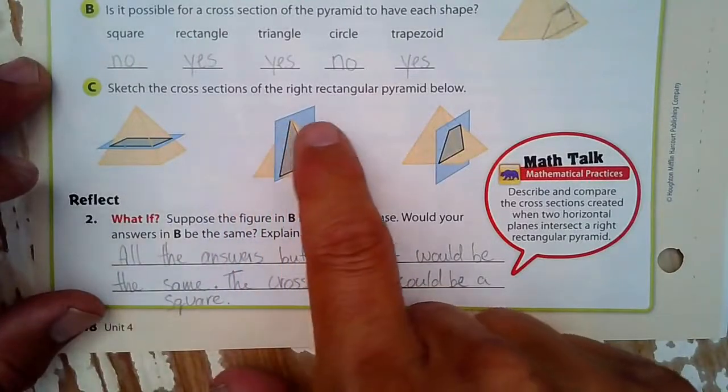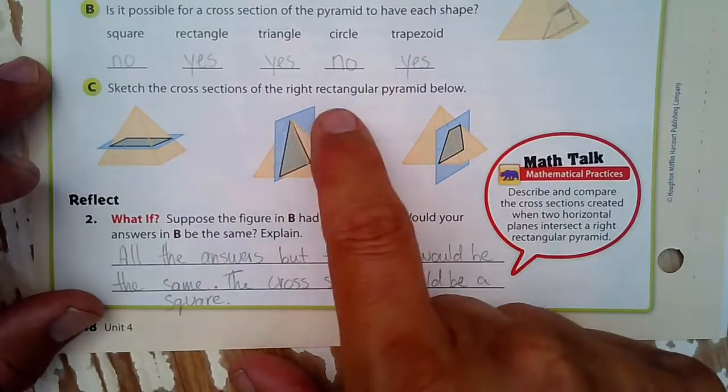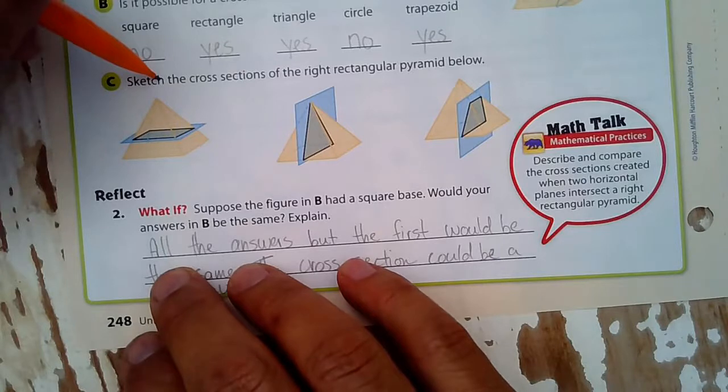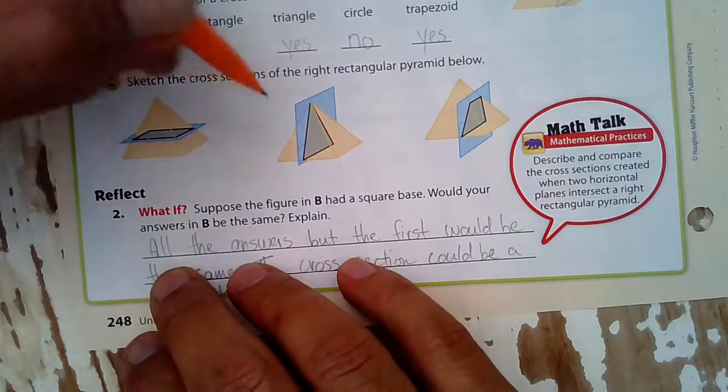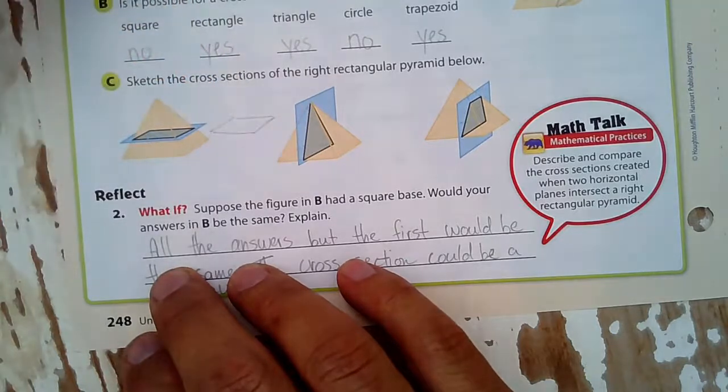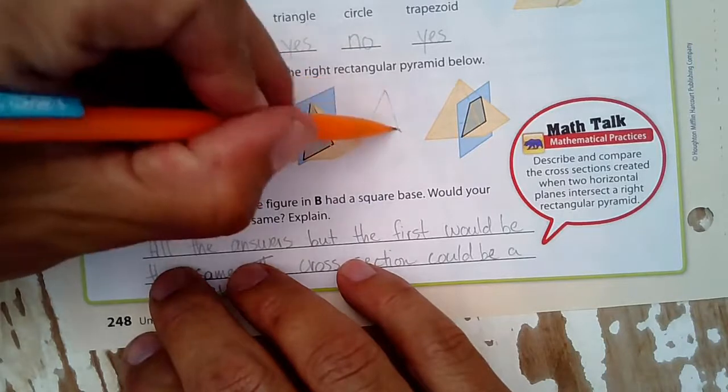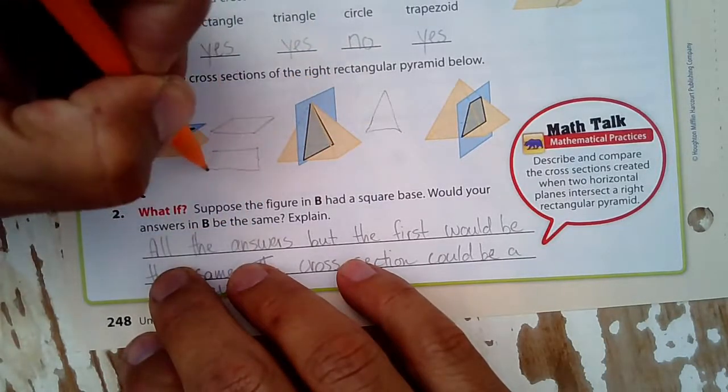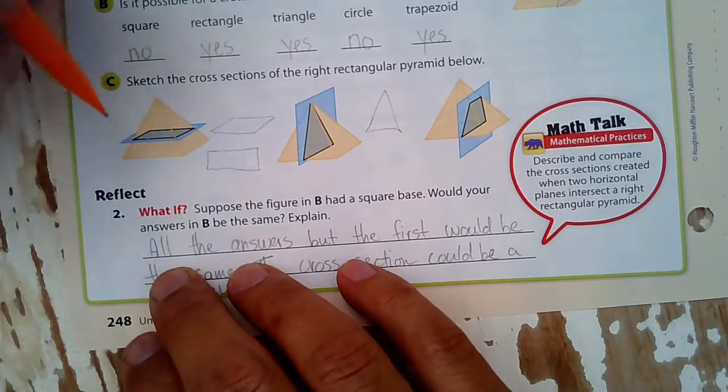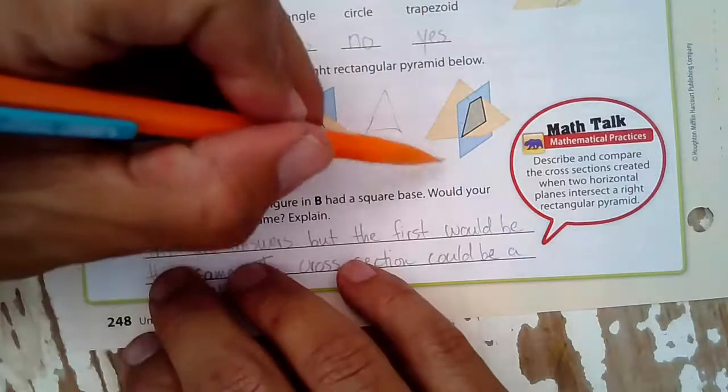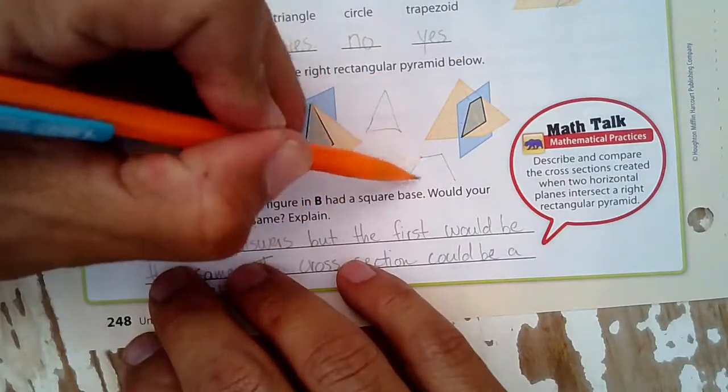Sketch the cross sections of the right rectangular pyramid. So that's a rectangle. So I would draw a rectangle. This, I would draw a triangle. Or maybe I should just draw a rectangle like this. That's what it would be if you look straight down. And then this one would be a trapezoid. A trapezoid looks like that.